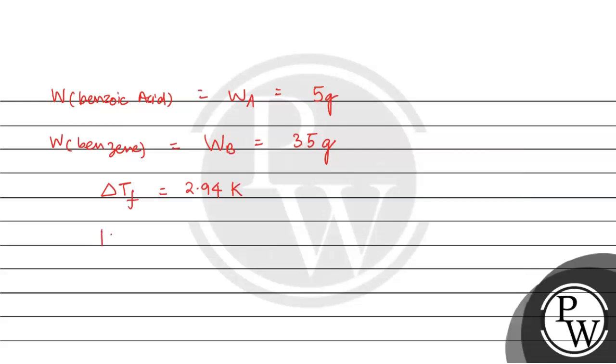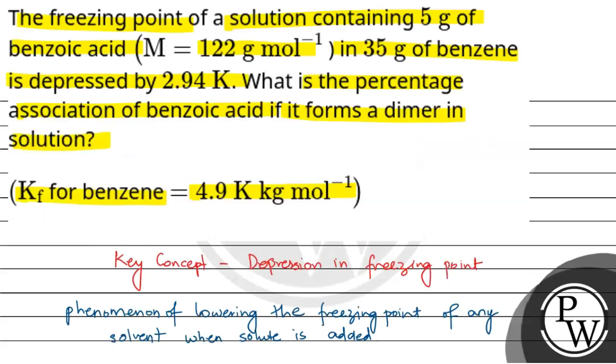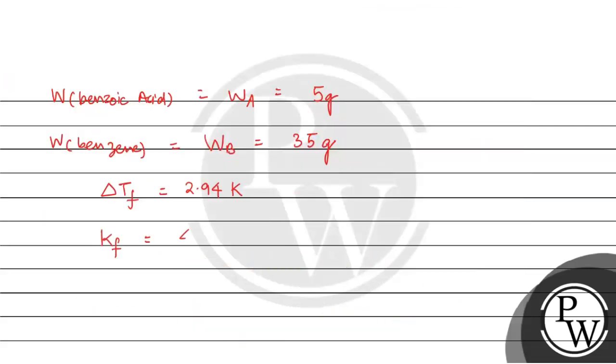Kf here in the question is given to be 4.9 Kelvin kilogram per mole, and the molarity of benzoic acid in benzene is given to be 122 grams per mole.